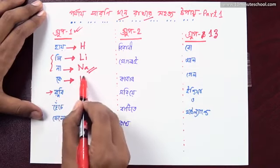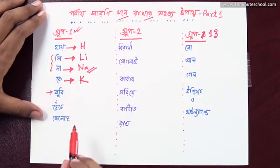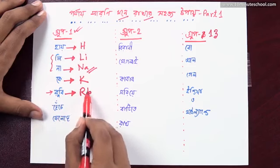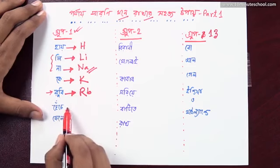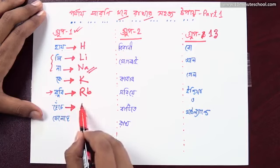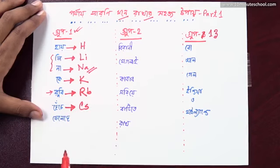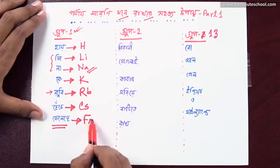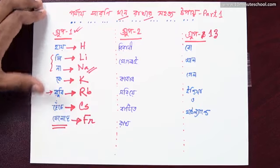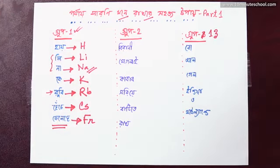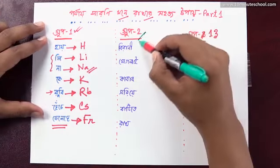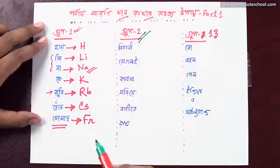This is Group 2, and we will also do the same. The next element is potassium. Potassium — the amount of potassium is potassium, the same as potassium.